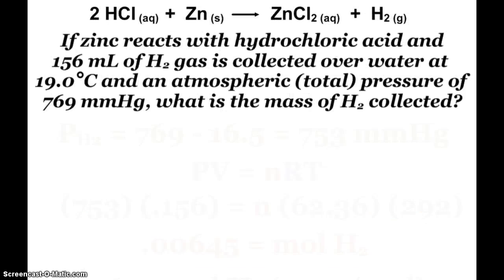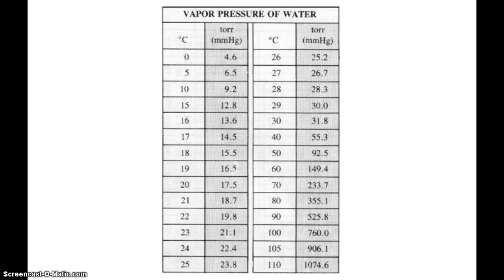So, how does that look? Here we see zinc reacting with hydrochloric acid, and when this happens, 156 milliliters of the hydrogen gas is collected over water, and this is at 19 degrees Celsius. And the atmospheric pressure, the total pressure in the lab, is recorded as 769 millimeters of mercury. So, ultimately, what is the mass of this hydrogen gas that's collected? Well, first off, the water vapor is dependent upon temperature, the water vapor pressure. And so, we have these tables out there, and you see yours in your packet. So, at 19 degrees Celsius, the vapor pressure of water is 16.5 torr, or millimeters of mercury.